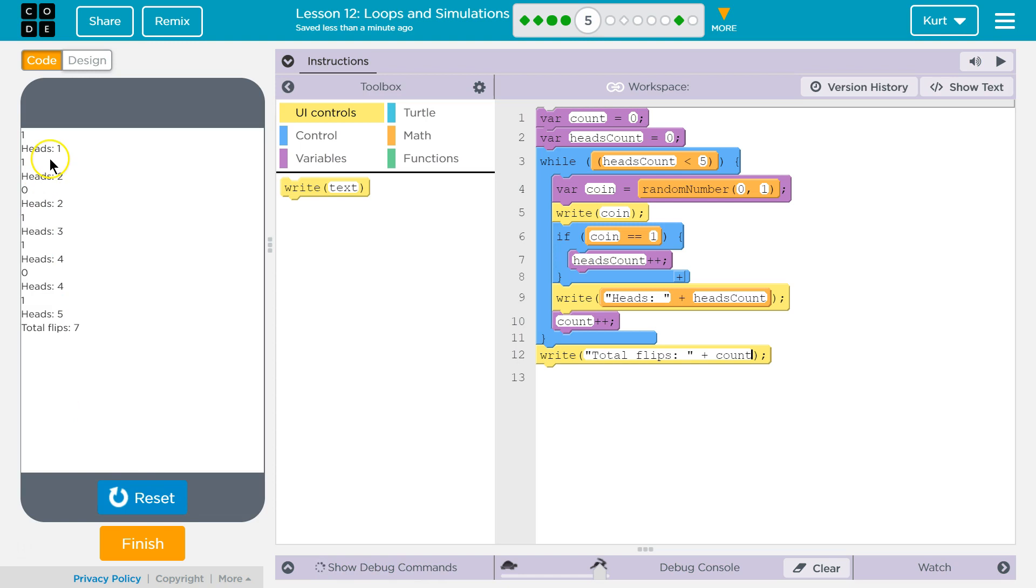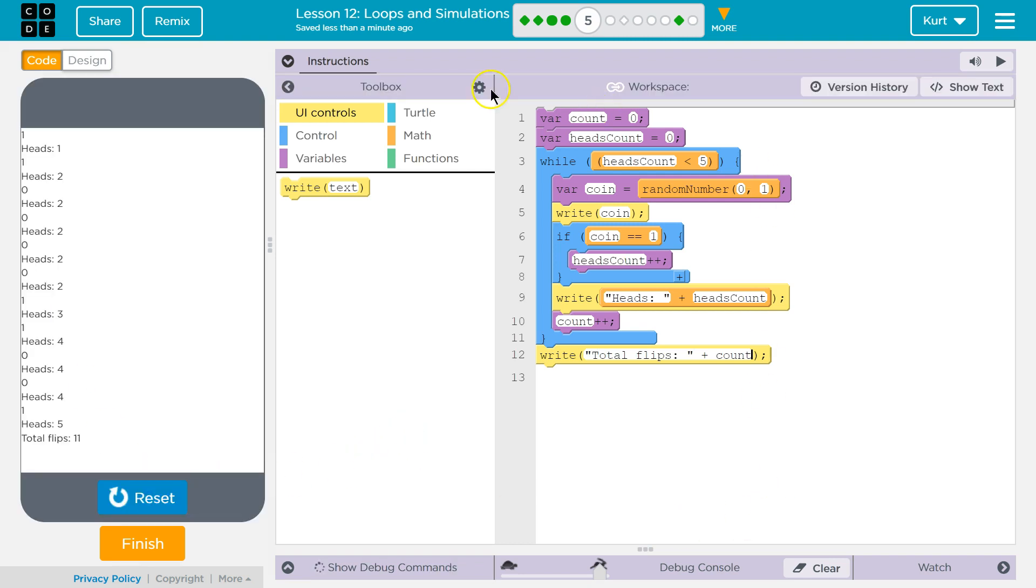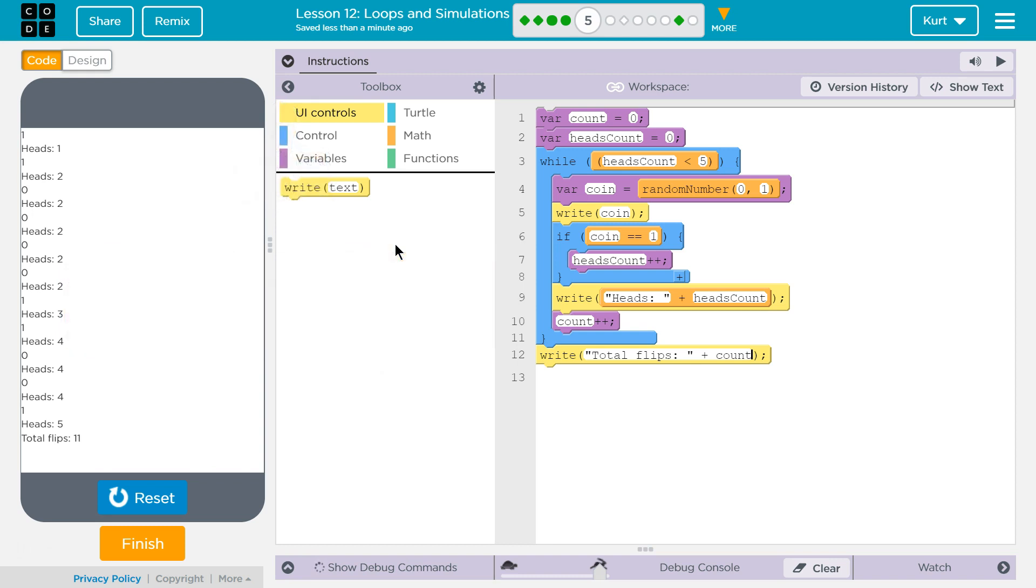Seven. One, two, three, four, five, six, seven. Cool. So this is the code that's working for me. Great. Let's keep going.